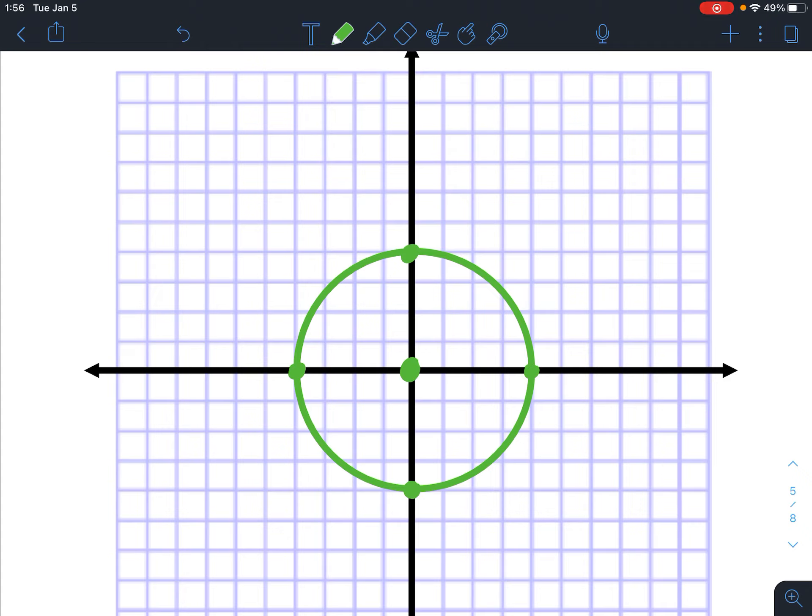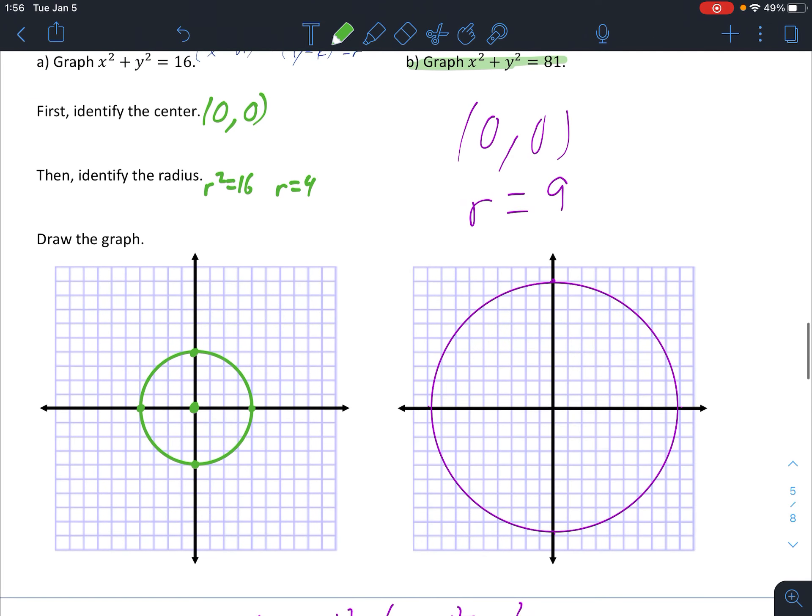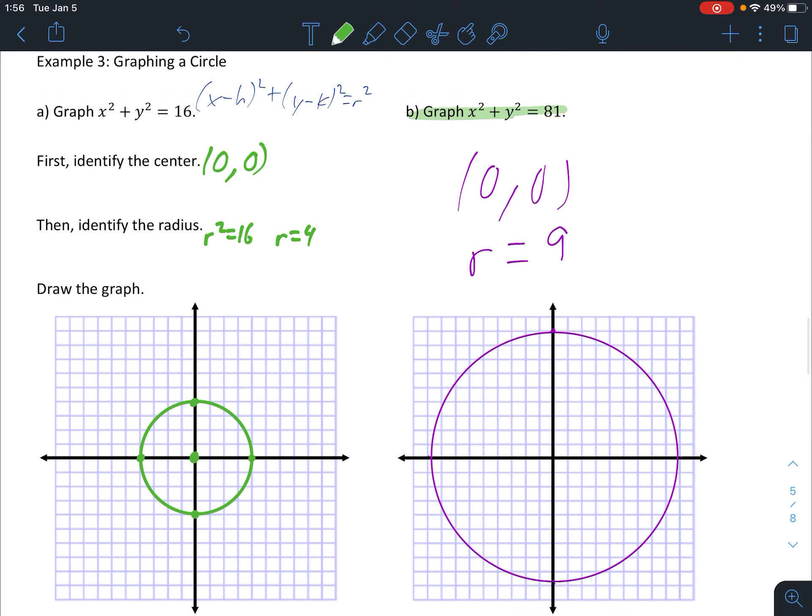Please pause the video and try problem 3b. There's your answer for problem 3b. Center of 0, 0, radius of 9. And there's your big circle.